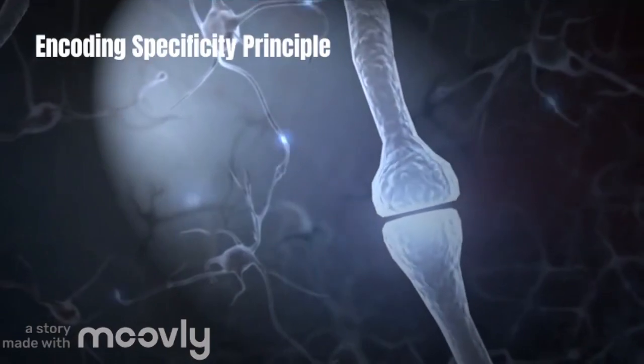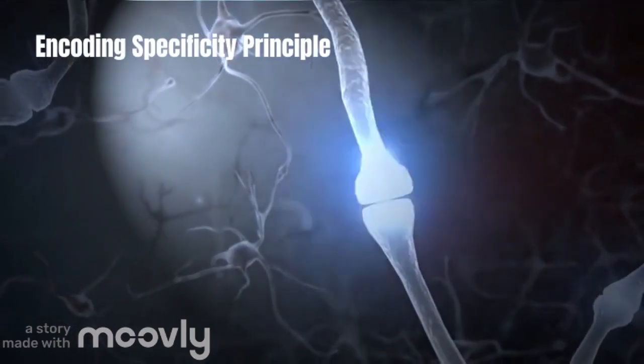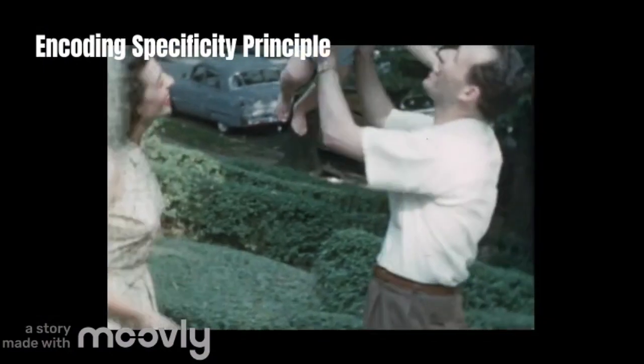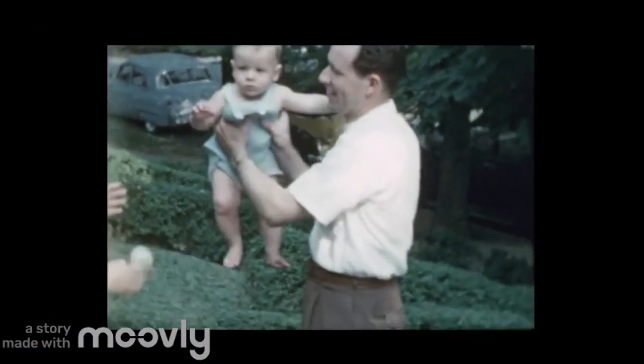Retrieval cues rely on the encoding specificity principle, which states that they are most effective when it matches the context in which the information was originally encoded.